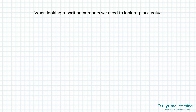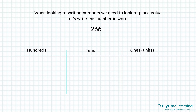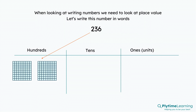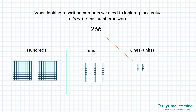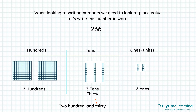When we look at writing numbers, we need to look at the place value. Let's write this number in words: 2, 3, 6. If we have our columns, the 2 means we have 2 in the hundreds column. The 3 is 3 in the tens and 6 in the ones or units. We can see we have 2 hundreds, 3 tens — which is the same as 30 — and 6 ones. So 2, 3, 6 is 236.